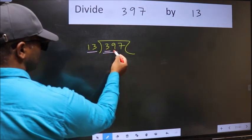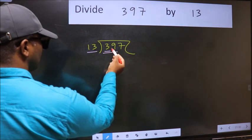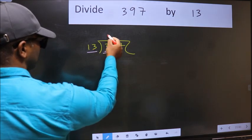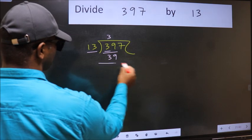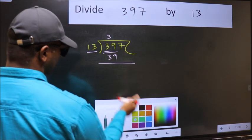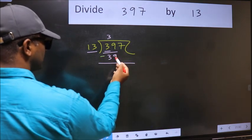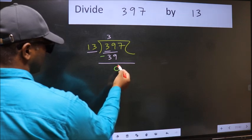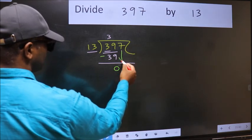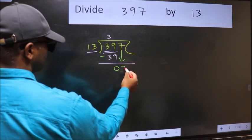So we should take two numbers, 39. When do we get 39 in 13 table? 13 times 3 is 39. Now we should subtract. 39 minus 39, 0. After this, you bring down the beside number 7 down.